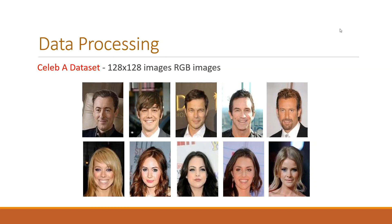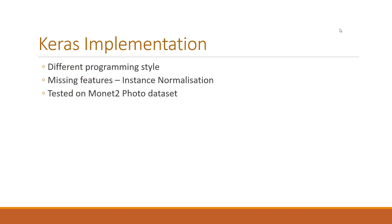Now that we know how the CycleGAN architecture looks, we can proceed with the implementation. The first step is data processing. The original CelebA dataset contains 200,000 images of size 256×256. We choose only the best images from this dataset and convert them into 128×128 color images. Here are a few samples of the CelebA dataset.